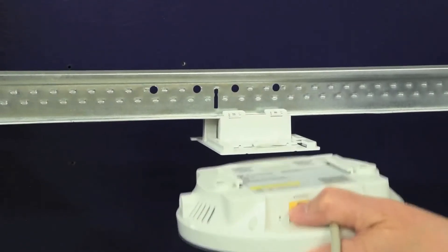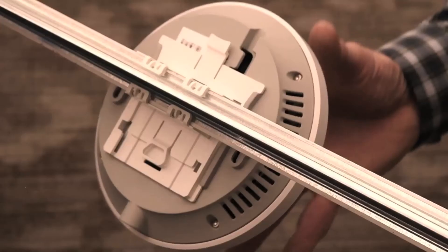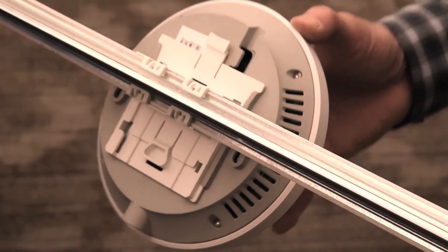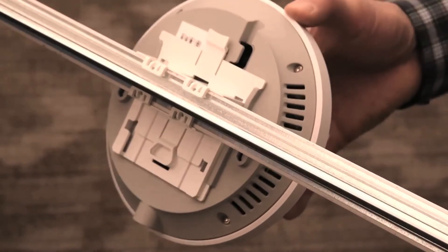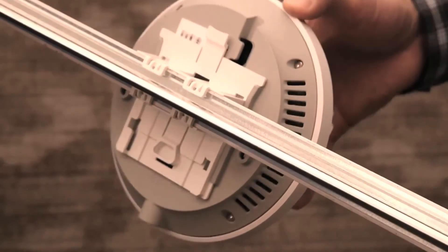There is also a wider section of the bracket so it can't be put on too far. The AP should now be securely fastened to the t-bar. While still holding the AP, rock it back and forth to verify it is a good attachment.